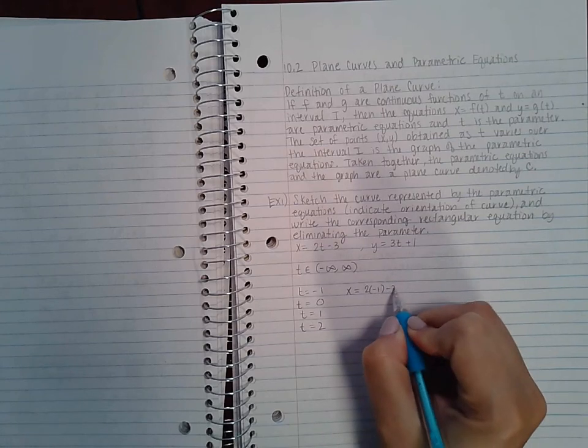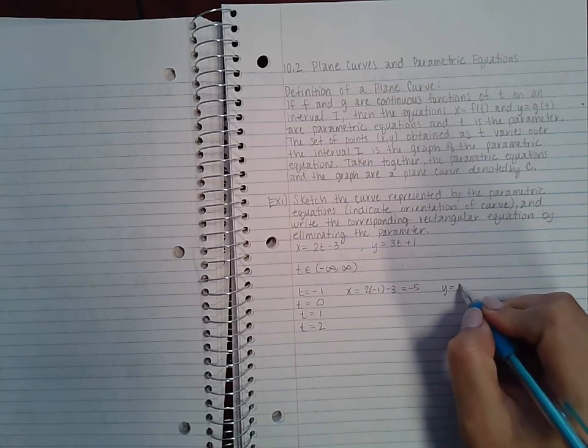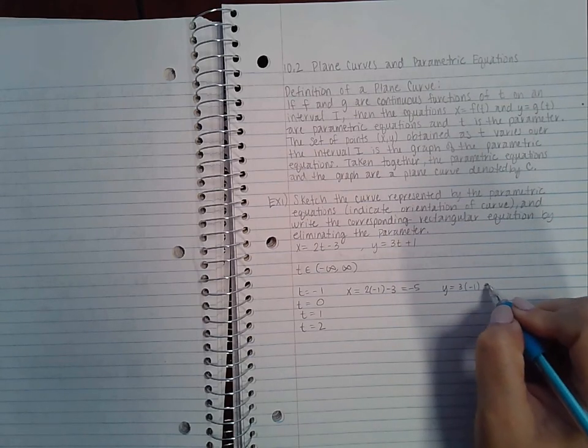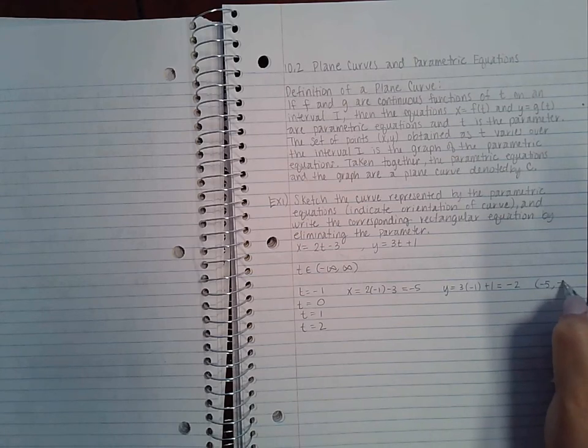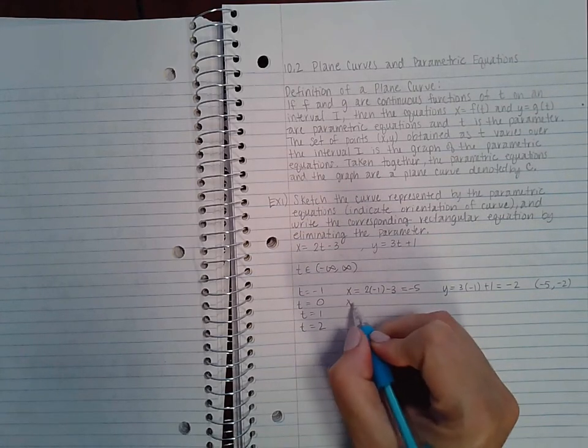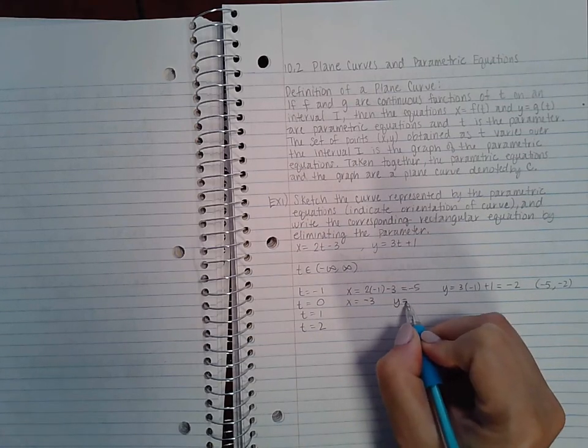3 times -1 plus 1, which is -2. So we get the point (-5, -2). For t = 0, we get x = -3 and y = 1.